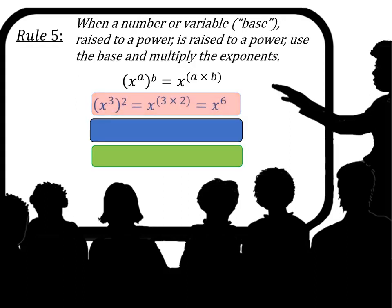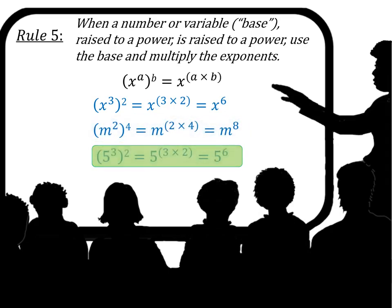Rule 5: when a number or variable — the base — raised to a power is raised to another power, use the base and multiply the exponents. This is a power raised to a power, or an exponent raised to an exponent. In the example, x raised to the exponent a, and that whole quantity is raised to the exponent b, equals x raised to the power of a times b.